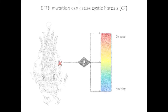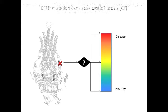Virtually all patients with cystic fibrosis have mutation in both copies of their CFTR genes, which encode for the cystic fibrosis transmembrane conductance regulator protein. So specifically, we are predicting cystic fibrosis from CFTR missense mutation.